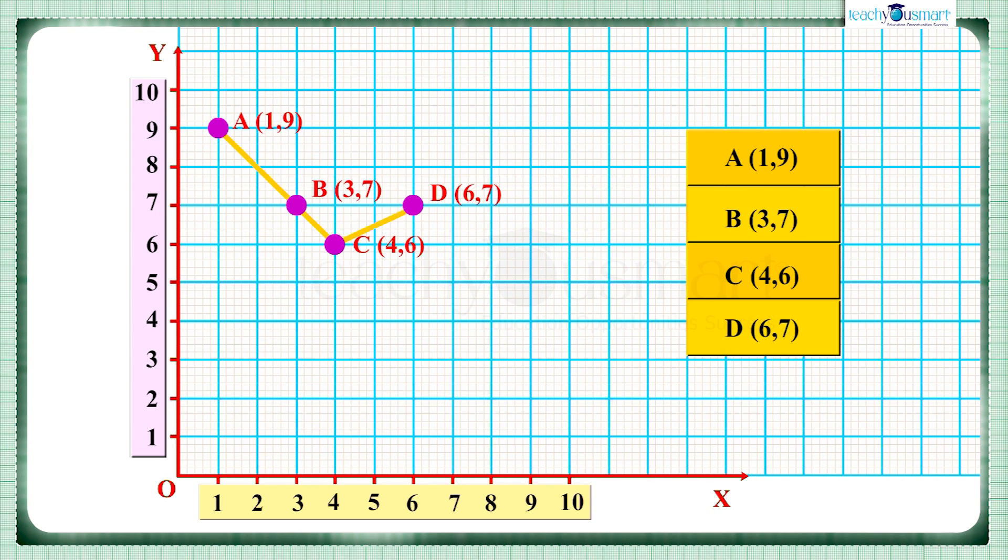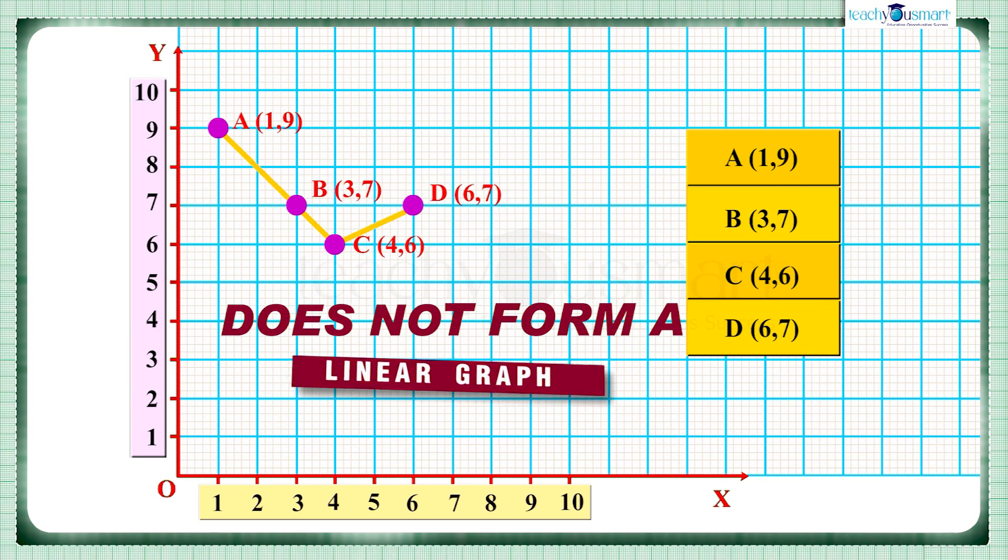We can see that all these points do not lie on a straight line, so we can say that the points A (1,9), B (3,7), C (4,6), and D (6,7) do not form a linear graph.